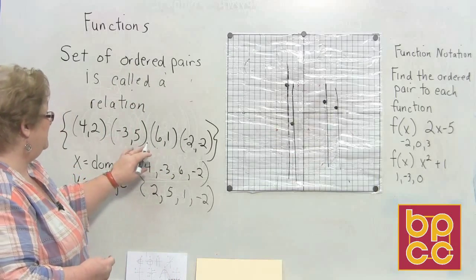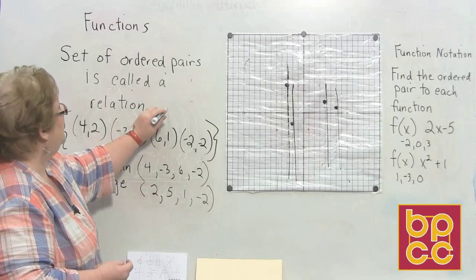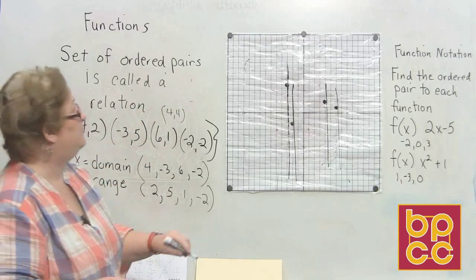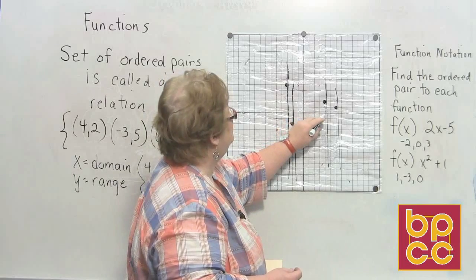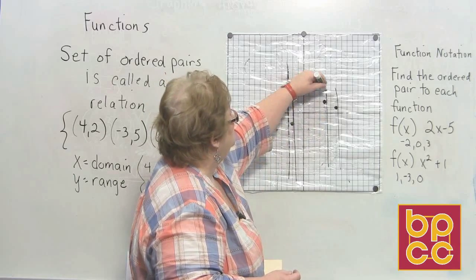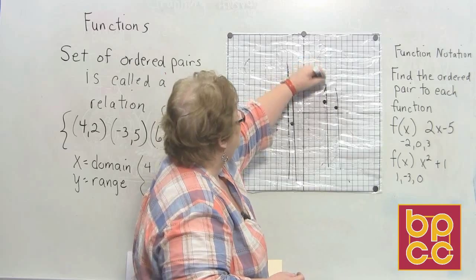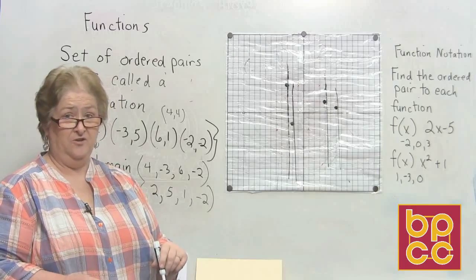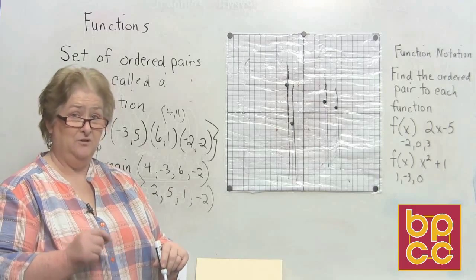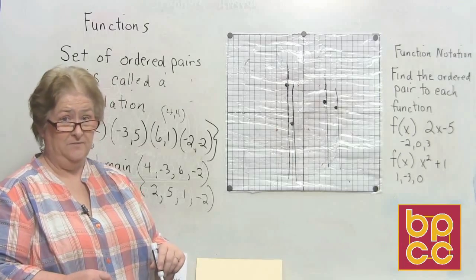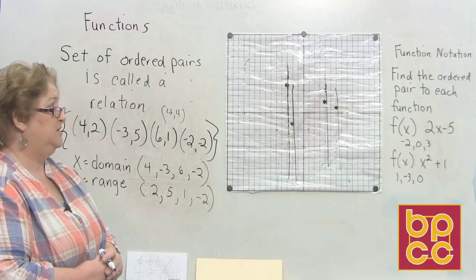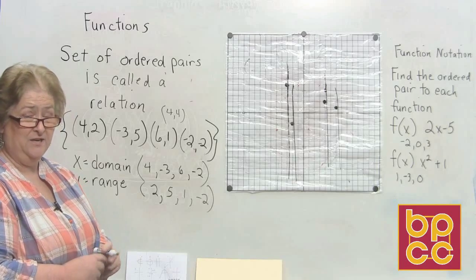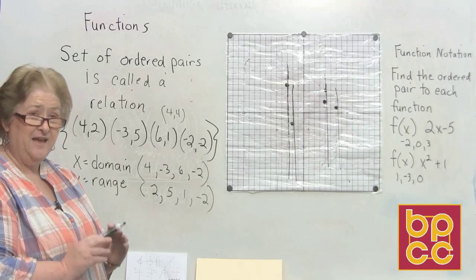If I decided to add to my set, say maybe a (4, 4) — let me go plot that for you, over one, two, three, four and up four — you see that we have two points on the very same vertical line. That is not a function because I have used the same X twice. So if we have all different X's then we have a function. It doesn't matter how many times you use the Y's — they can be used over and over again — but the X's have to be unique, they have to be different.